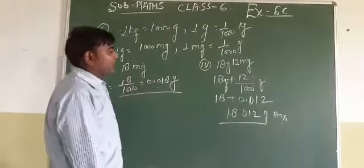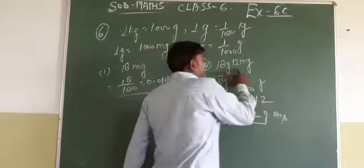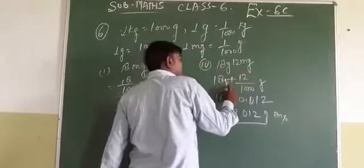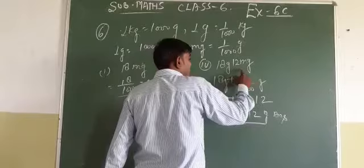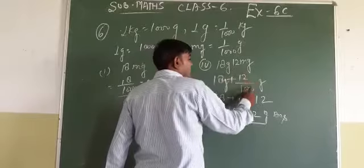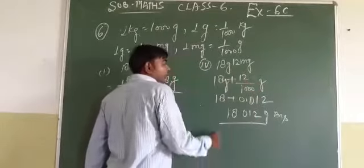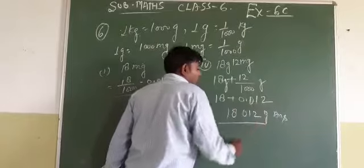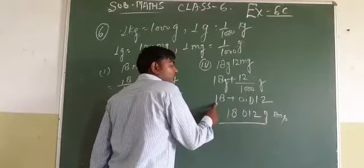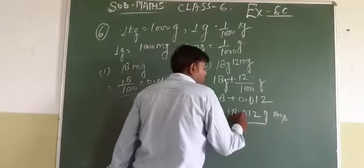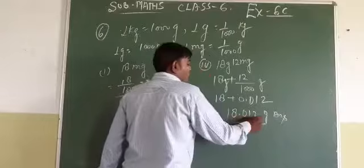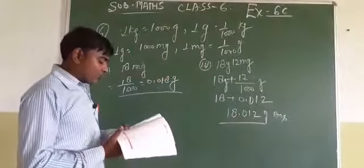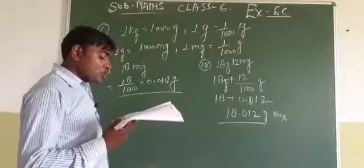Now let us talk about the second question, question 4: 18 gram plus 12 milligram. So we can write 18 gram plus 12 upon 1000 gram. Dividing gives 0.012. So adding 18 and 0.012 gives us 18.012 gram. Now let us talk about question number 7.